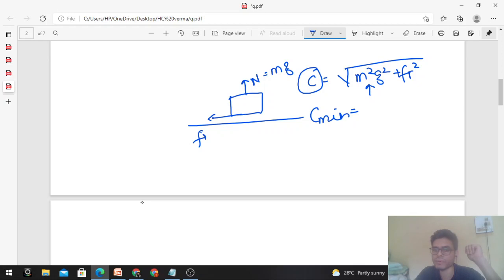Now, normal is constant. If you want its range, for minimum, see Mg is constant. What will friction's minimum value be? Friction's minimum value will be zero. If no external force is applied on the body to move it, then friction won't apply automatically. Friction opposes relative motion. If there is no force trying to move the body, then friction will not come into action. Friction only acts when there is a relative motion.